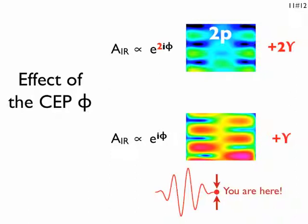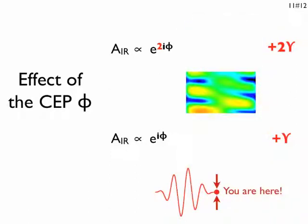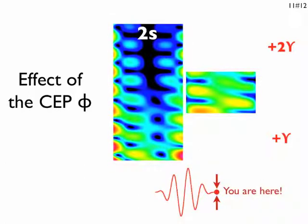Anyway, in the 2p channel the picture is pretty clean. In the intermediate region, of course, the fringes have a mixed behavior. If we look at the 2s channel, however, this mixed behavior is observed at all energies. This suggests that the underlying picture might in fact be more complicated.